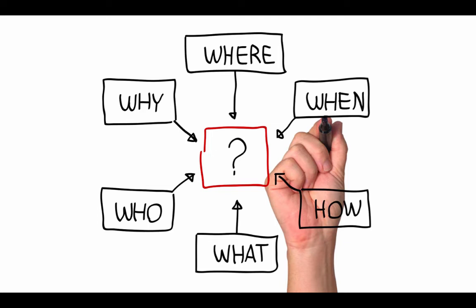If you have a source that's passed the CARS checklist and you want to use it in your speech, how do you orally cite it? You do it by answering these questions: who said it? What did they say? How did they say it? When did they say it? Where did they say it? And why is it important? Now let's apply that framework to the same bad example and try again.